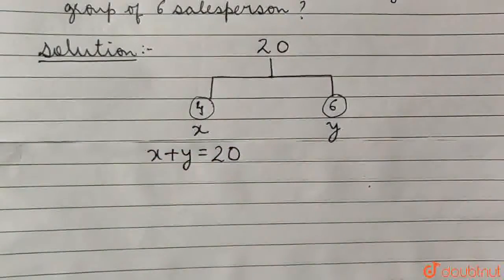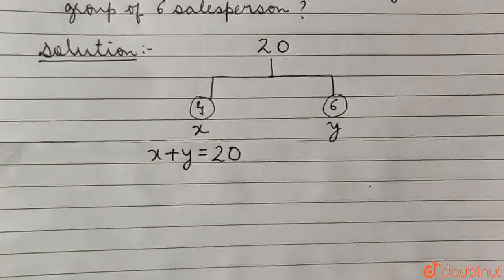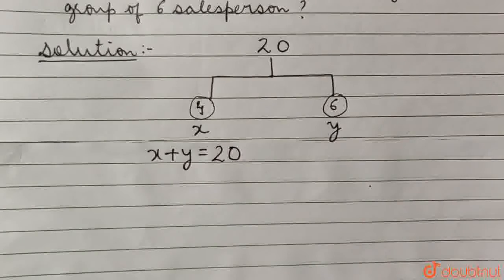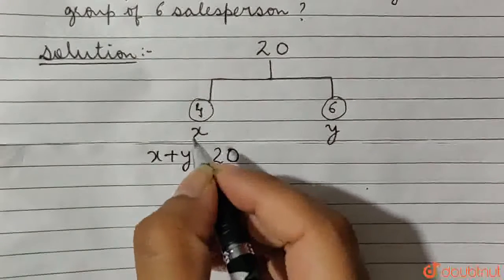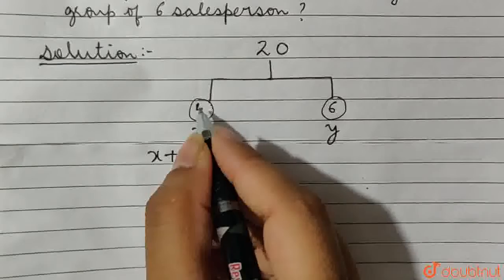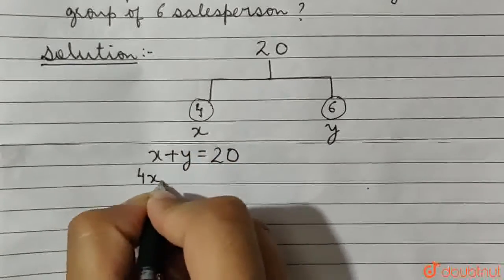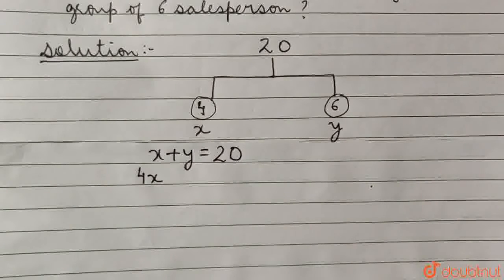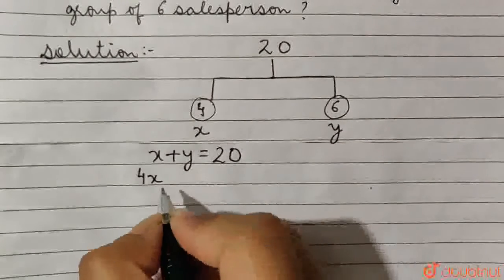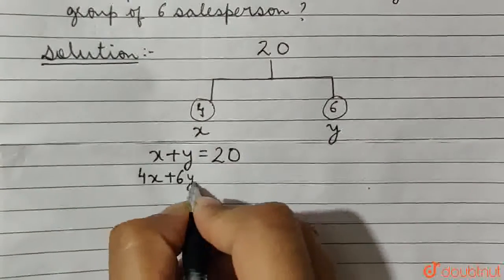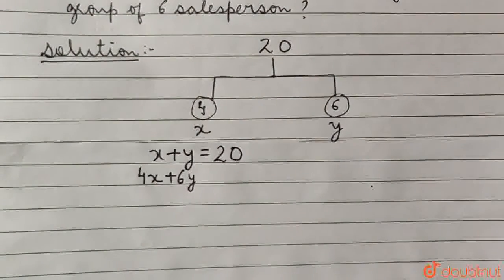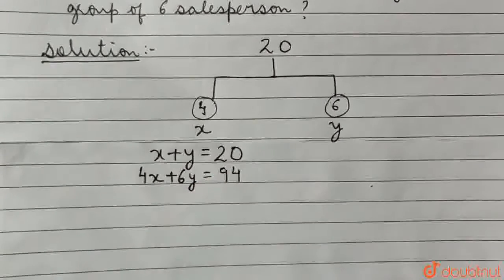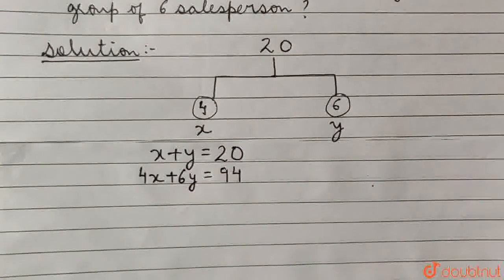Next, we have that 94 salespersons are discussing these strategies. Since X sub-topics are discussed in a group of 4, 4X number of people are there in total who are discussing in a group of 4. Similarly, 6Y number of people are discussing in a group of 6, and this must equal 94 because there are 94 salespersons.